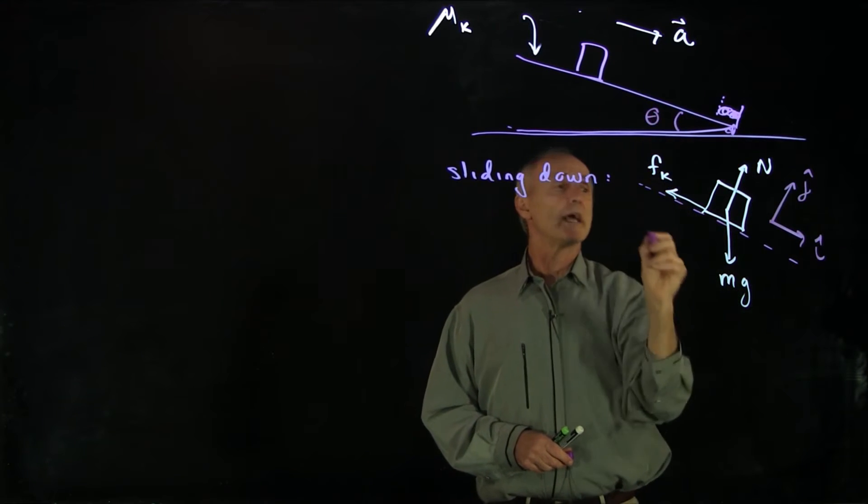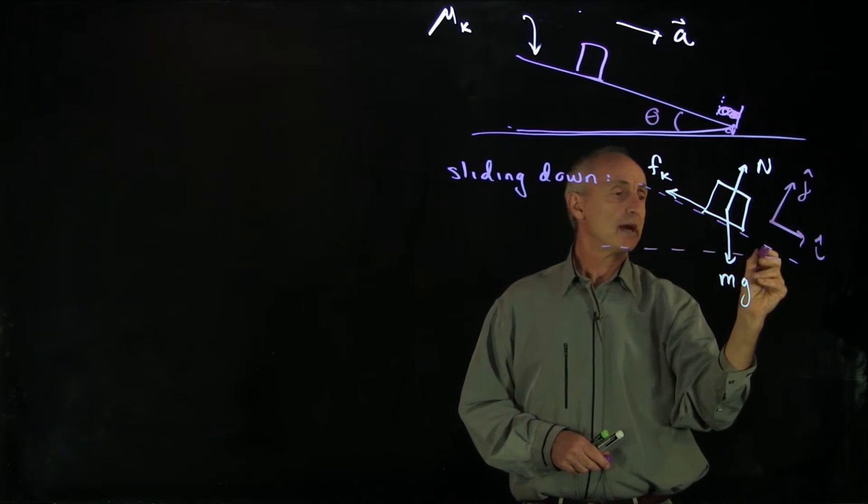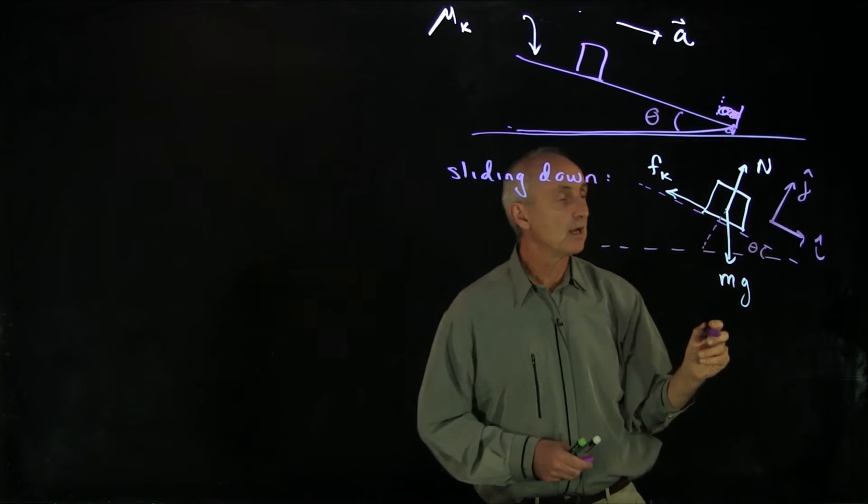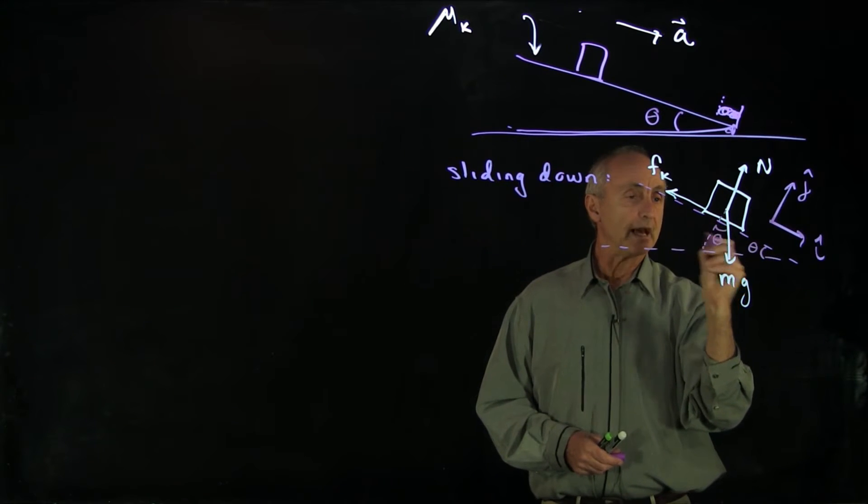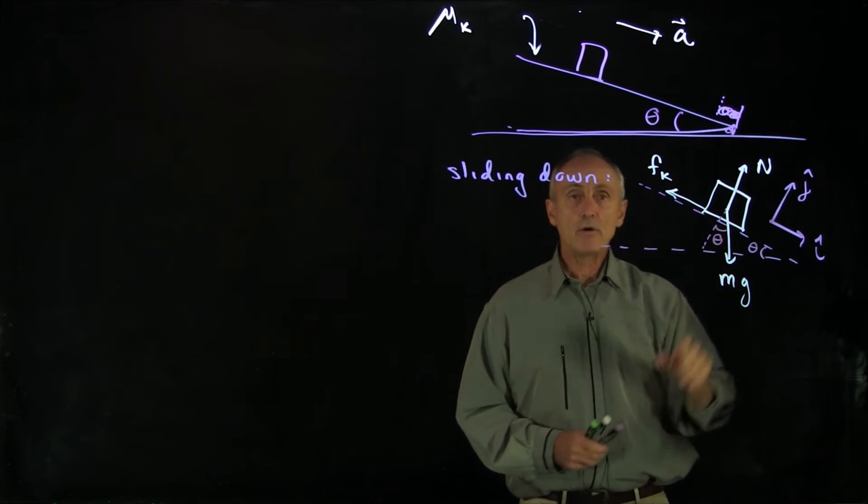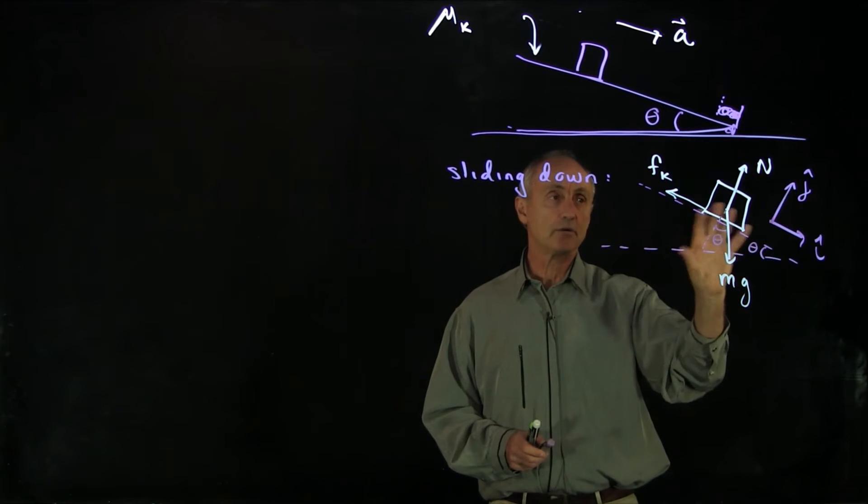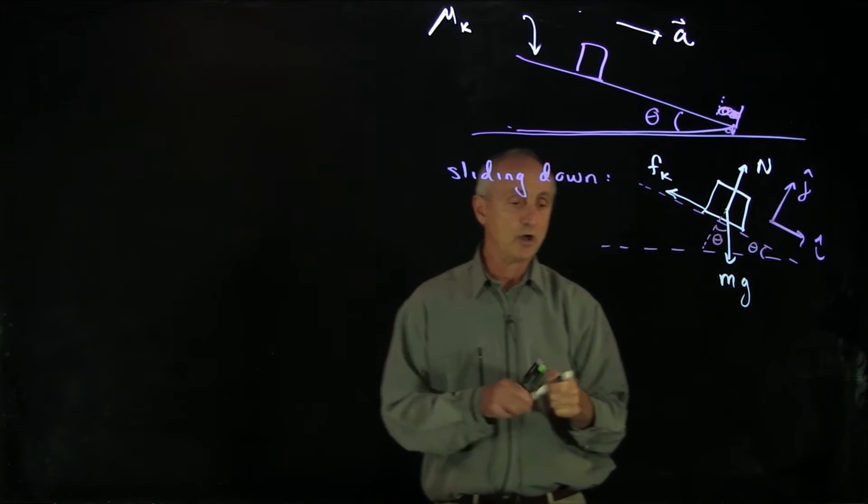I'll introduce an angle theta. That's the same angle theta here. One has to be a little bit careful in doing these types of sketches, but this is also the angle theta. Now I've chosen a coordinate system with unit vectors, I've indicated relevant angles, and the rest of the problem is just vector decomposition in applying Newton's second law.